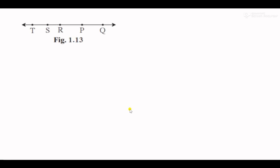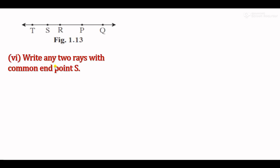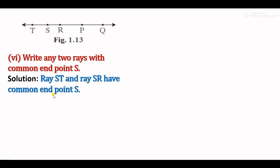Sub-question 6: Write any two rays with a common endpoint. You can choose endpoint S, R, P, or Q. For example, ray ST and ray SR have common endpoint S. So ray ST and ray SR have common endpoint S.